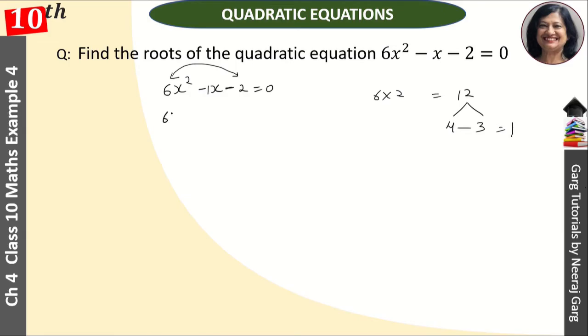So this is 6x² - 4x + 3x - 2 = 0. It's very simple. Because here it is -x, here it will be minus and here plus and here minus. You will understand the minus-plus case.